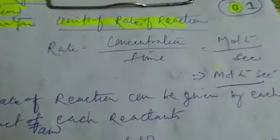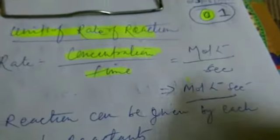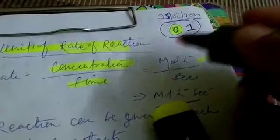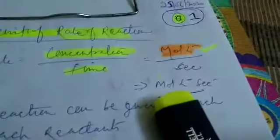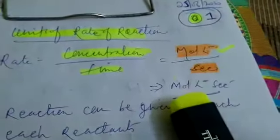Now what are the units of rate of concentration? The unit of concentration is mole per liter. The unit of time is hour, minute, second, etc.